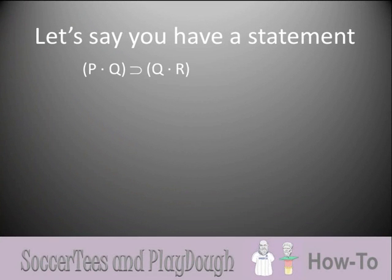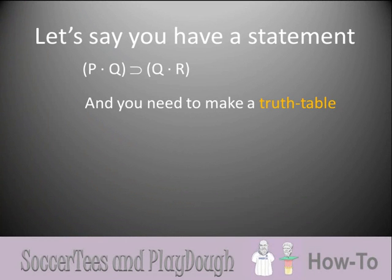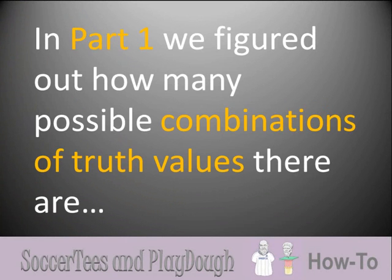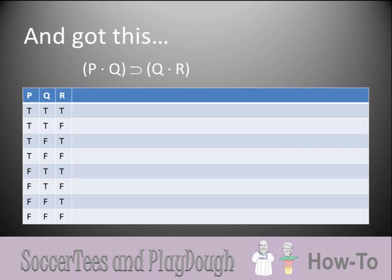So let's say you have a statement like this one: if P and Q, then Q and R, and you need to make a truth table. In Part 1, we figured out how many possible combinations of truth values there are, and we got a table where each statement letter gets its own column and we filled in the possible combinations of truth values.